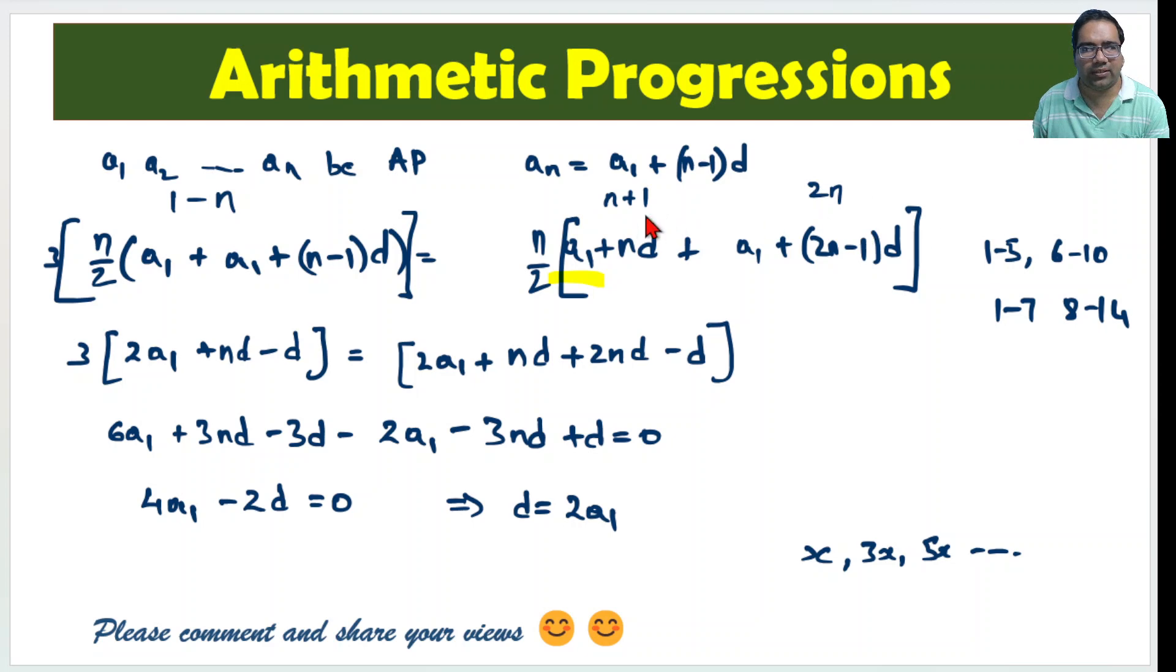n plus 1 to 2n. n plus 1th term is a1 plus nd. 2nth term is a1 plus 2n minus 1 times d. The formula is a1 plus n minus 1 times d. Instead, here n will become 2n. In this case, n is 2n. So, this is the first term of the second part. Next n terms. This is the first term of this. This is the last term of this. The sum of all of this is n by 2 times first term plus last term. First term is n plus 1th term. Last term is 2nth term.